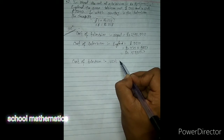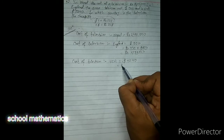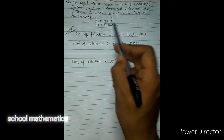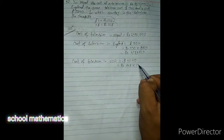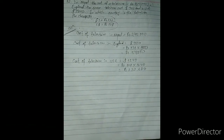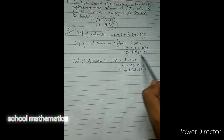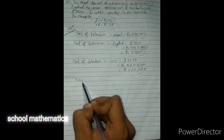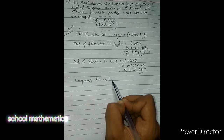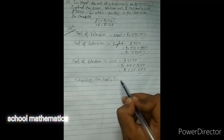Let's also find the cost in the USA. It is given as 1240 dollars. To convert into Nepali currency, we multiply according to the question: one dollar equals 107 rupees. So 107 into 1240 gives us one lakh thirty-two thousand six hundred eighty. Now comparing: Nepal is one lakh forty thousand, England is one lakh seventeen thousand nine hundred, and the USA is one lakh thirty-two thousand six hundred eighty. Which is the cheapest?